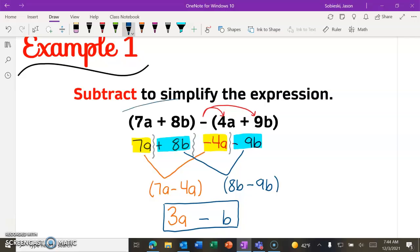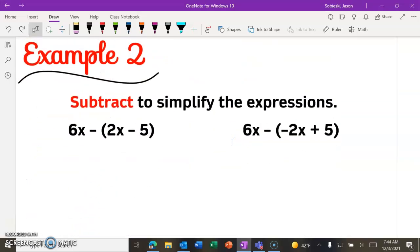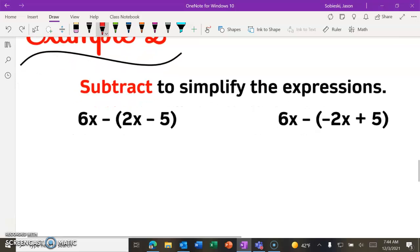So our final simplified form here for the expression is 3a minus b. Again, that final answer is exactly the same thing as what we started with, right? We didn't change the value of anything. We just changed the way it looks. We put it in a more simplified form. But if you were to plug in a number for a and b, both the original problem and your answer would still give you the same result. So, all right. So example 2. Let's get you started, and maybe then we can have you pause the video and see if you can finish this one off.